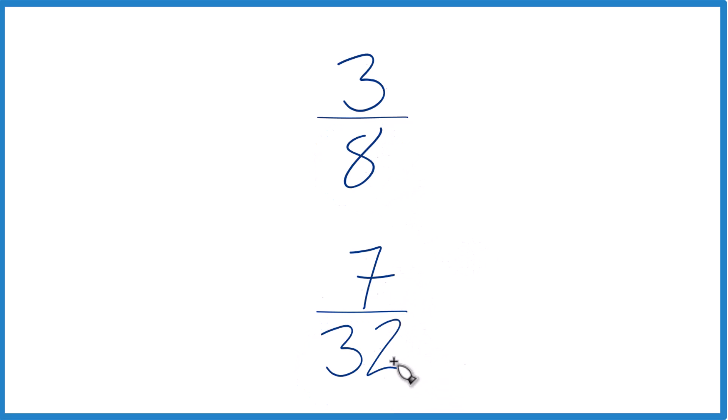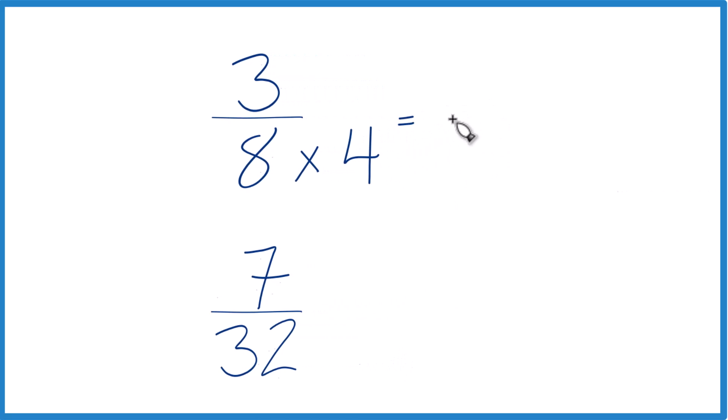8 goes into 32 4 times, so let's just multiply 8 times 4. That'll give us 32 here as our denominator. And then down here we already have 32, so we'll just keep this all the same, 7 32nds like that.